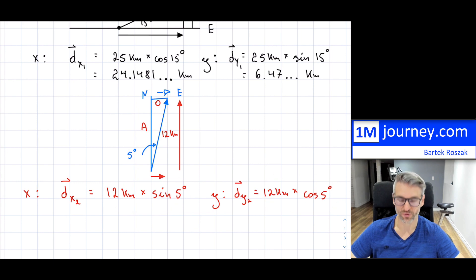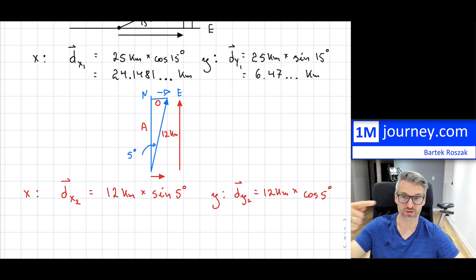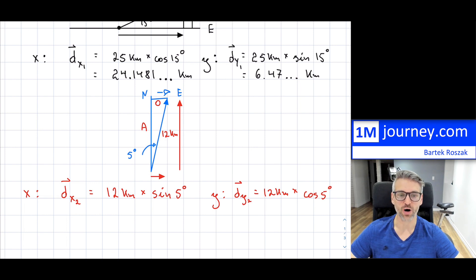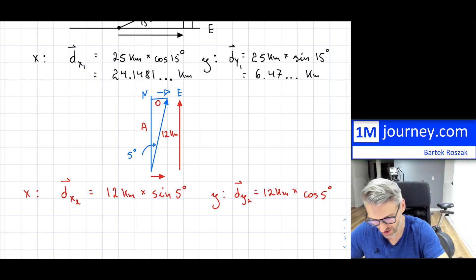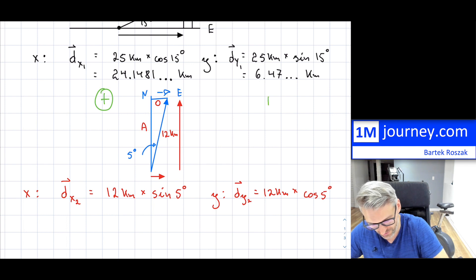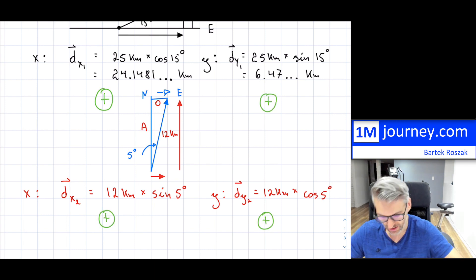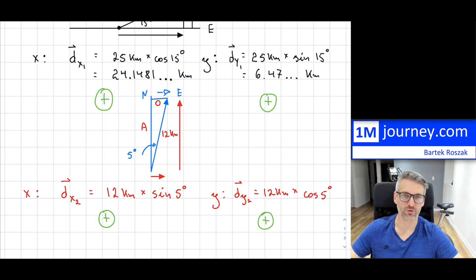You can compute these values or leave them in this format to avoid rounding. Checking signs: X₂ is positive — it's to the right. Y₂ is also positive — it's going up. So far, for the first two displacements, all four components are positive, assuming right is positive and up is positive — or equivalently, east and north are positive.